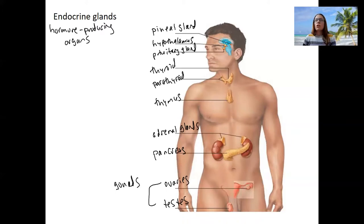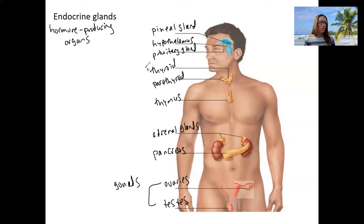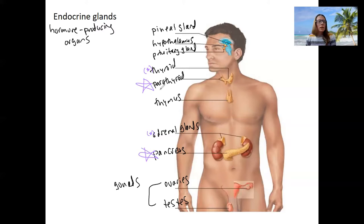I'll star which ones we'll focus on this semester: parathyroid — yes; adrenal glands — a little bit; pancreas — yes; thyroid — maybe a bit, but not much. This week I'll do the pancreas and parathyroid as kind of case studies of the endocrine system.